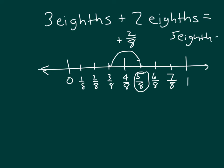And if we write out a number sentence — three-eighths, when we add it together with two-eighths, we get five-eighths.